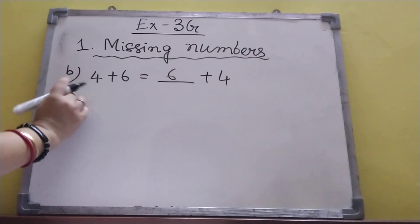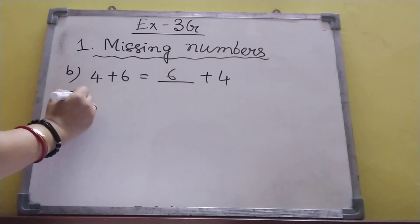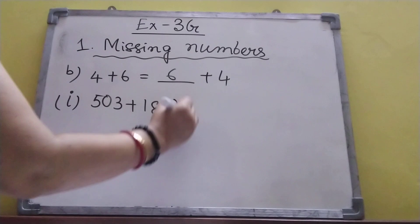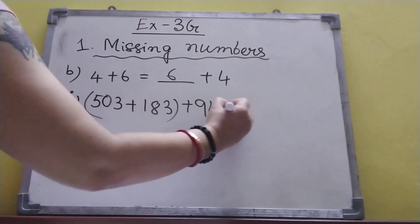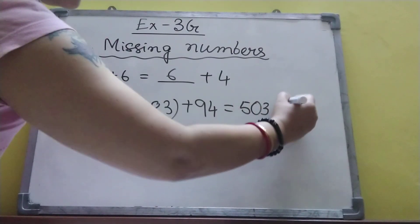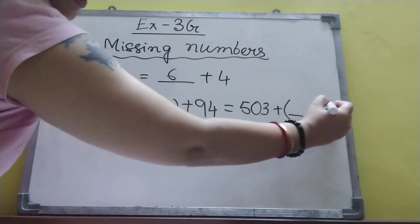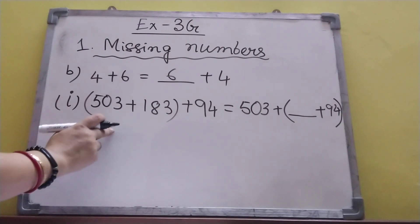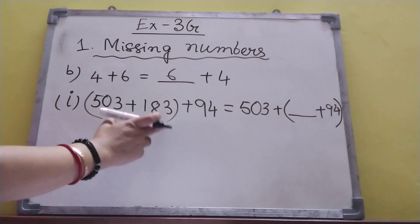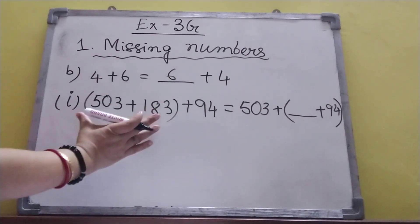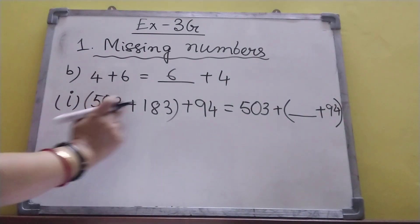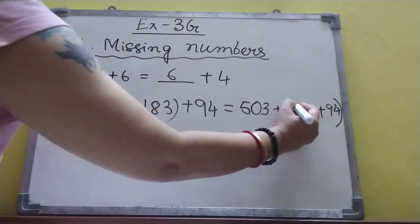Now I: five hundred and three plus one hundred and eighty-three plus ninety-four equal to five hundred and three plus dash plus ninety-four. This is which property? This is grouping property — just see, three numbers are there. First this group they have added, and then on this side the other group they have added. So five hundred and three stays, and one hundred and eighty-three is missing.